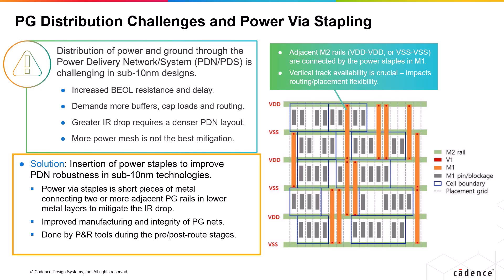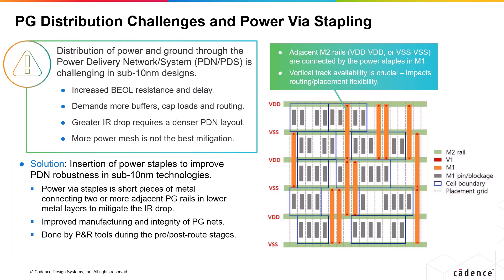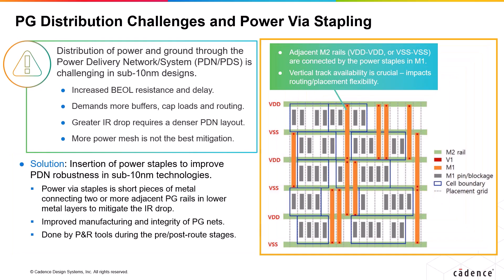VIA stapling offers improved manufacturing integrity of PG nets. The picture here illustrates power staple insertions. In this example, adjacent M2 rails of VDD-VDD or VSS-VSS are connected by power staples in M1. Since each power staple goes across at least two cell rows, vertical track availability in the context of standard cell pins and pre-routes is crucial to achieve sufficient power staple insertion.